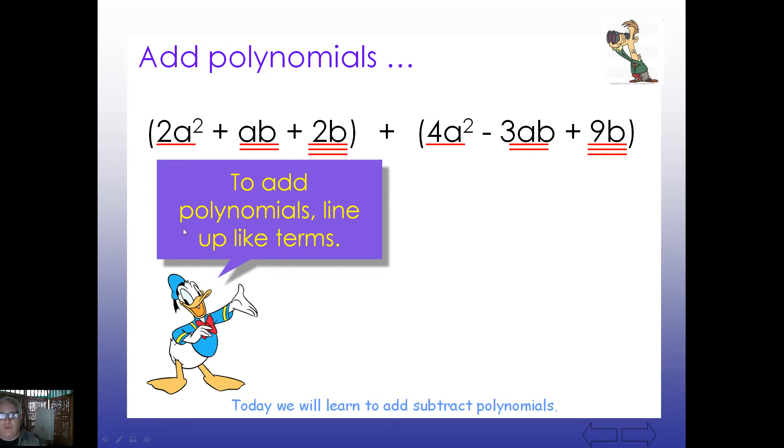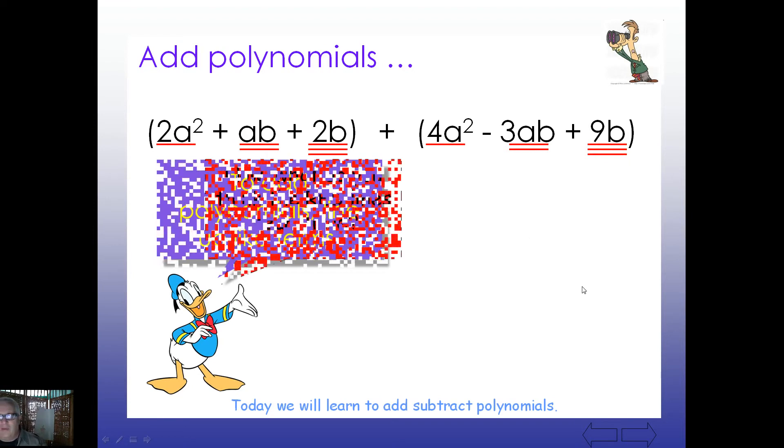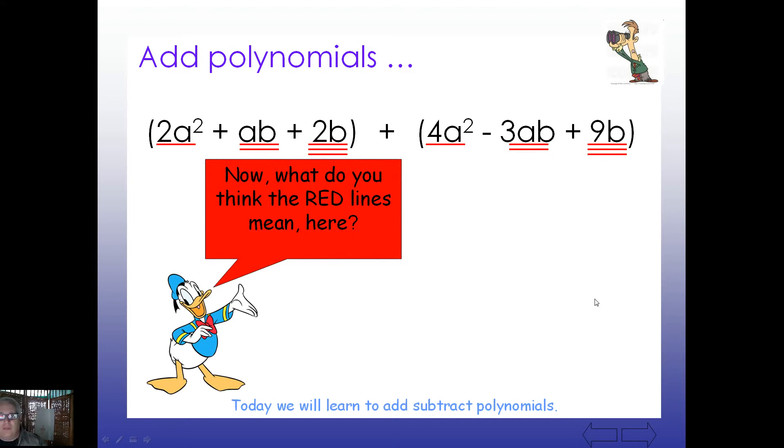Notice we put some red marks underneath each term. And right about now, what do you think these red lines mean? What can we do with the term that has one line under it, the term that has two, and the term that has three? If you look carefully, the term that has one line in both of these sets, both of them match: a to the second power, a to the second power. And how about the one with two? It has ab, has ab. Now, the coefficients are different, the number out front. But that's okay. We're just looking at the exponent and the base. They must match perfectly.